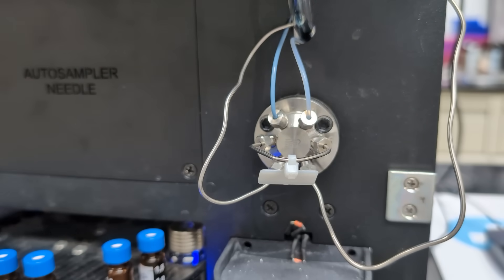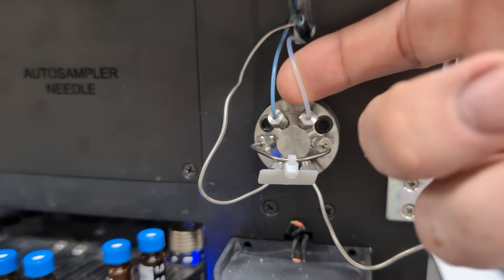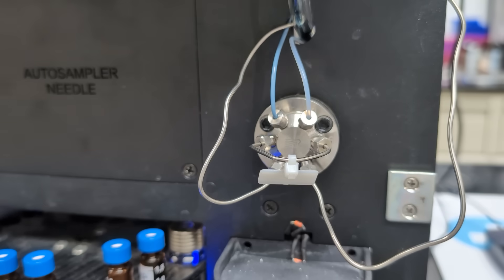You'll hear that valve turn a couple of times. It'll turn to inject, wait about two minutes, and then switch back, and allow you to start cleaning the sample loop, the needle, and the sampling syringe portion, all while the run is happening. That way you don't lose any time in between your runs.